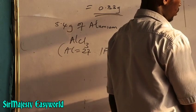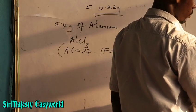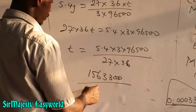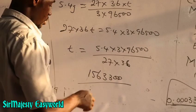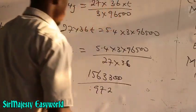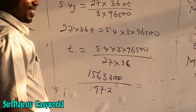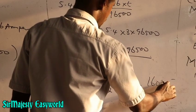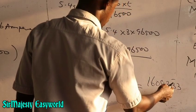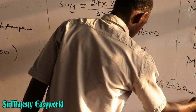Calculating the numerator: 5.4 × 3 × 96,500 equals 1,563,300. The denominator: 27 × 3.6 equals 97.2. Dividing gives T equals approximately 16,083.33 seconds. That is the time of flow of the current. If you want the answer in hours, divide by 3,600.